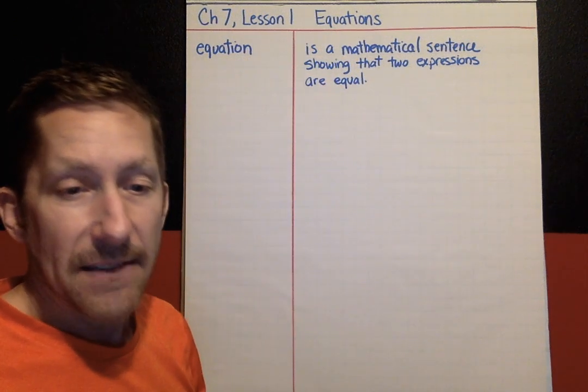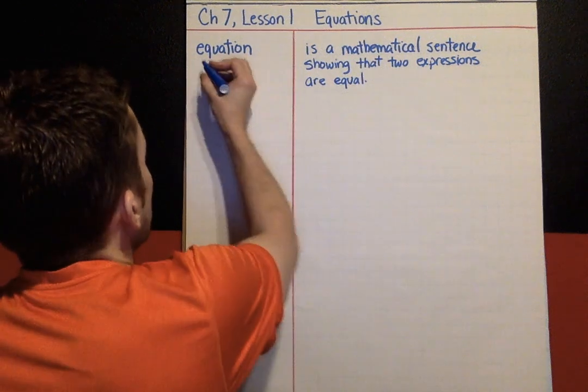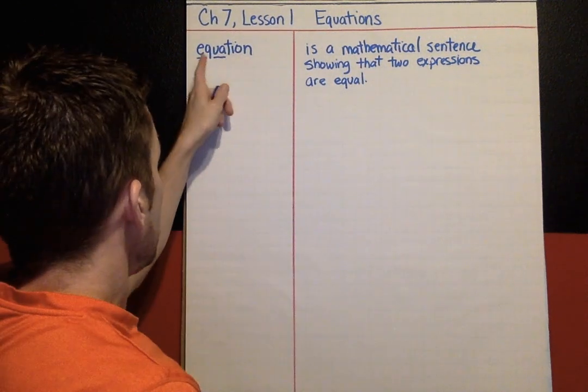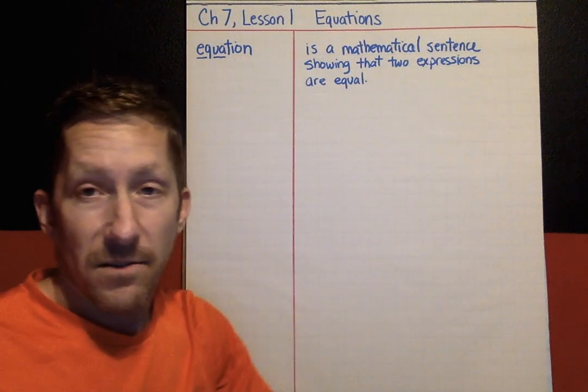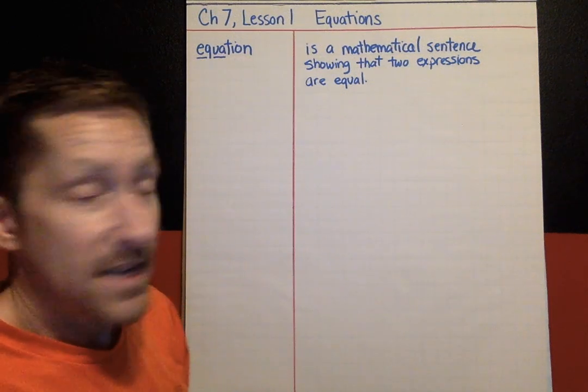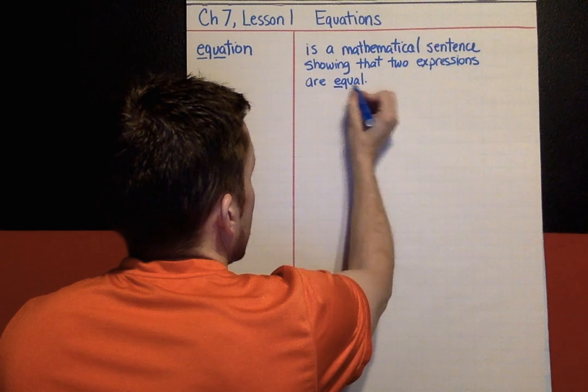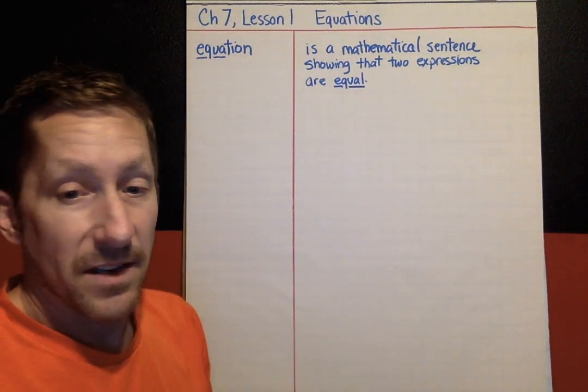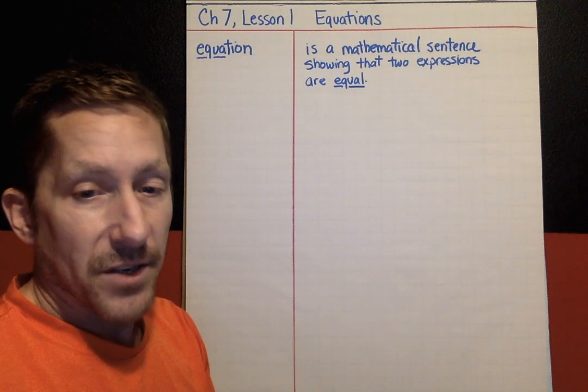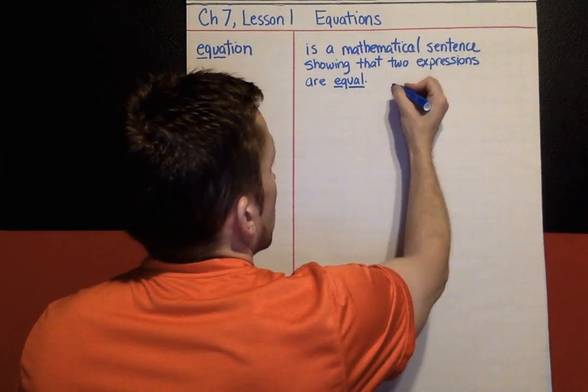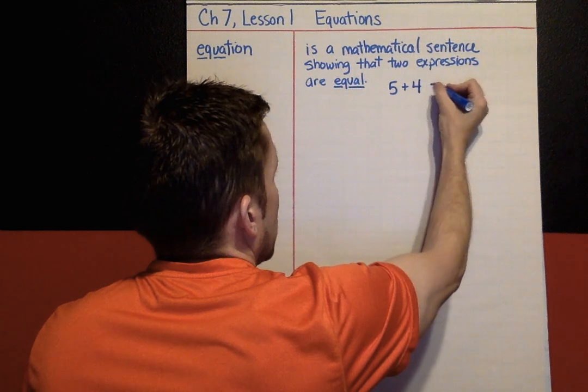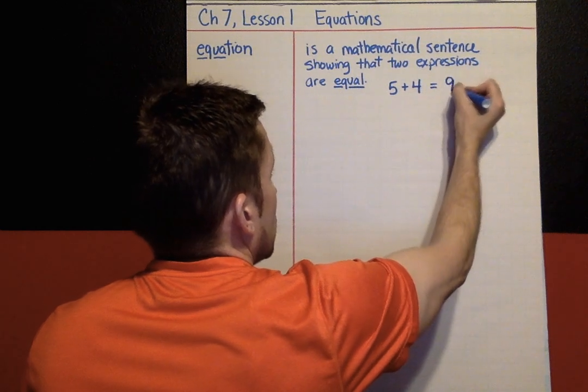An equation has to have an equal sign. I'm going to underline the first part of the equation, E-Q-U-A. It's the first letters of equal. You need to have an equal sign in an equation. Here is an example of an equation. Five plus four equals nine.